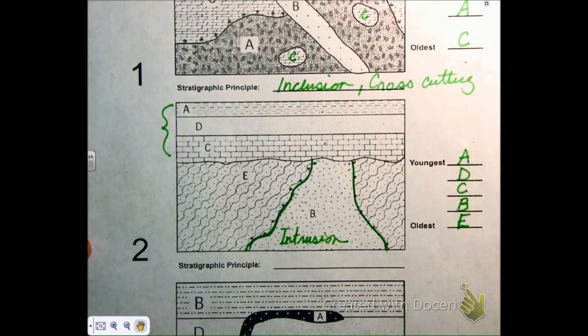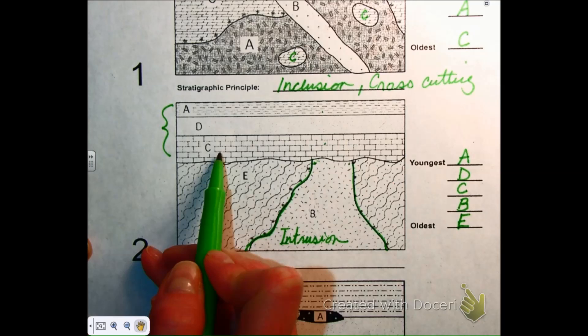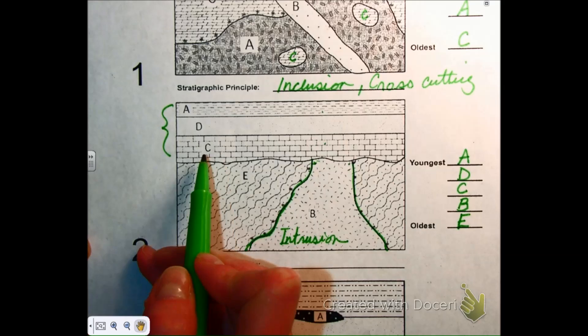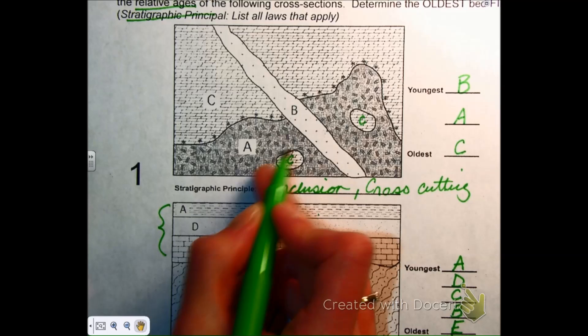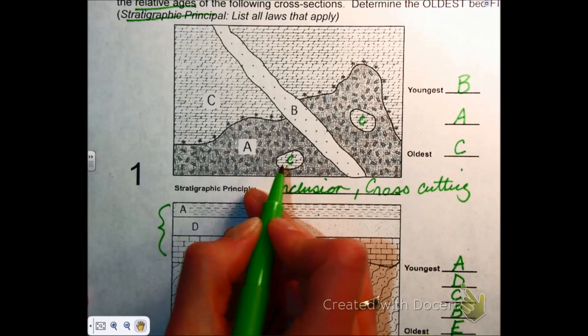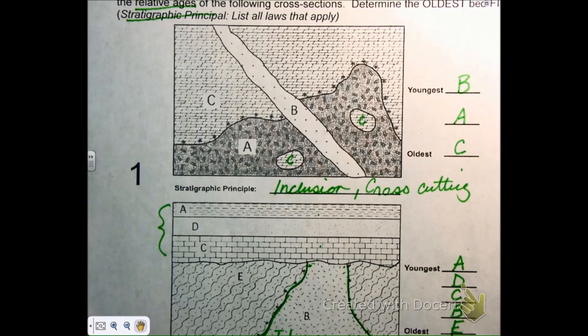Then why would C be older than A? Based on the law of superposition, because it is lower in the ground. Oh, I'm sorry, I meant in number one. C, this is the law of inclusion. So any layer that's included, or if you've got a part or a piece of a layer included in another, it is older than the layer it's in. Oh, okay. That's why we're practicing. It's hard to keep them all straight, but the more we practice, the better we get.